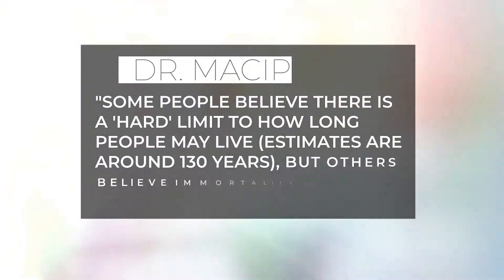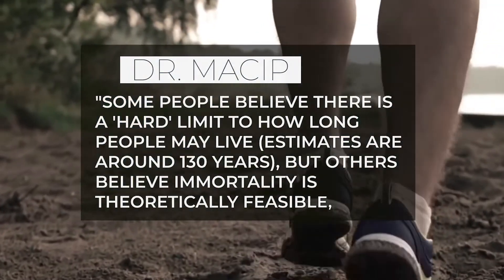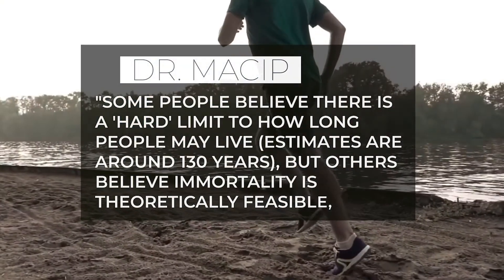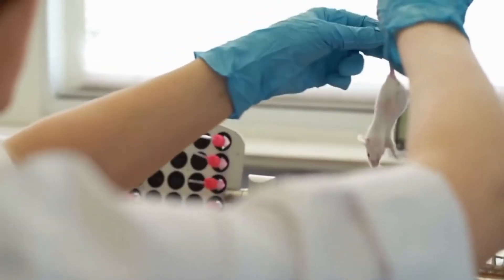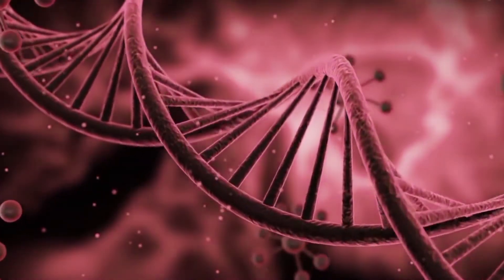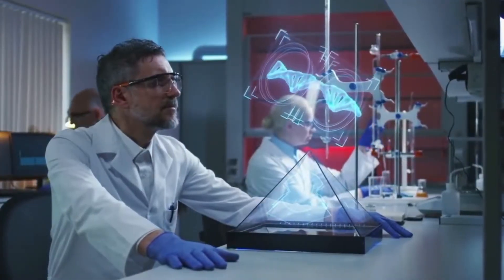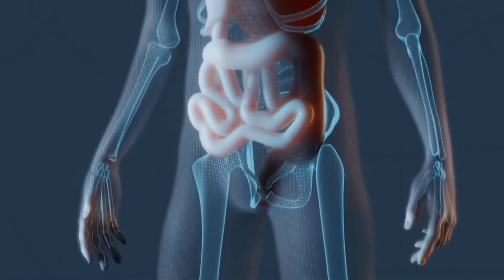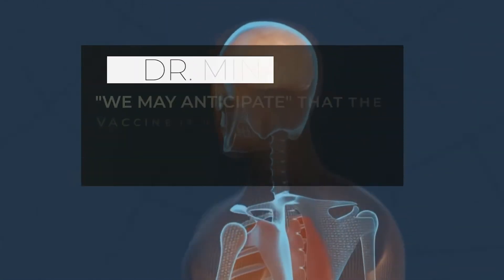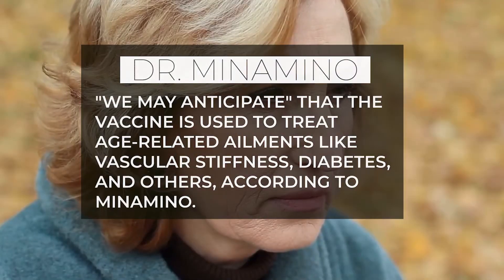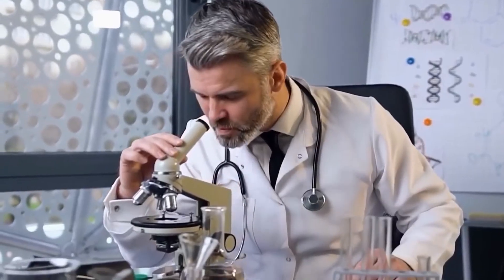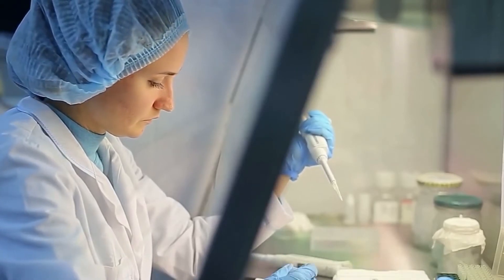Some people believe there is a hard limit to how long people may live, with estimates around 130 years, but others believe immortality is theoretically feasible. Massip writes it is far too early to speculate on how much longer people can live or whether the average lifespan has a limit. The research team led by Toru Minamino, a professor at Juntendo University, revealed that mice administered the vaccine had fewer zombie cells, also known as senescent cells, and fewer wooden blood vessels in the deceased areas. We may anticipate that the vaccine is used to treat age-related ailments like vascular stiffness, diabetes, and others, according to Minamino. The researchers' findings were published in an online paper in the journal Nature Aging in 2021.